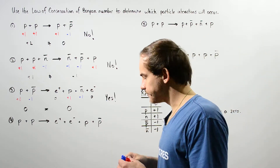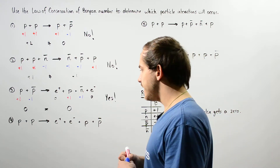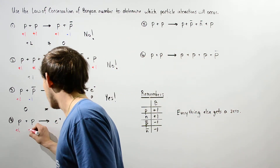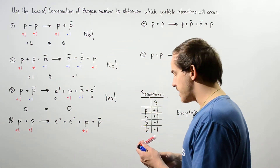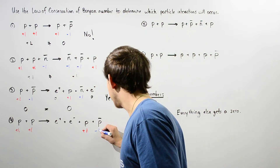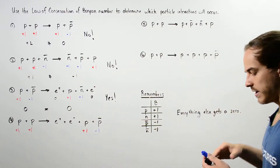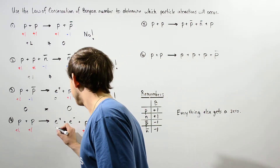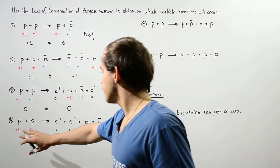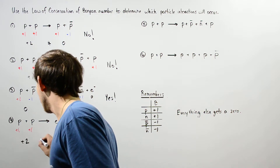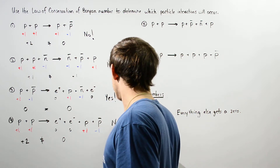Now let's move on to the fourth interaction. We have two protons interacting, each getting a positive one, so the left side totals positive two. On the right side, we have a proton with positive one, an antiproton with negative one, and two other particles in the 'everything else' category with zero each, giving a right-side total of zero. Since positive two does not equal zero, this reaction does not take place.